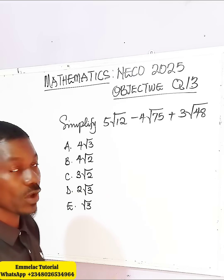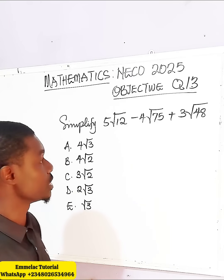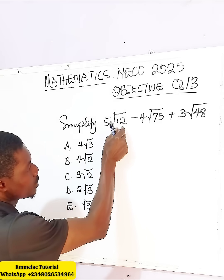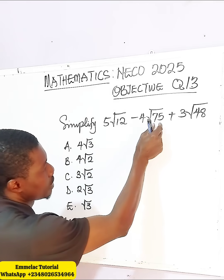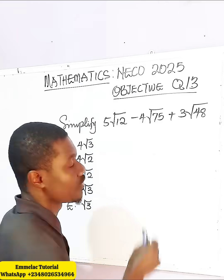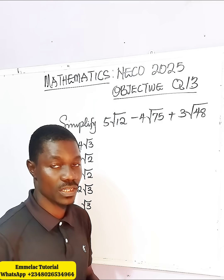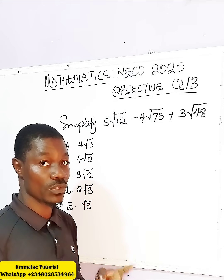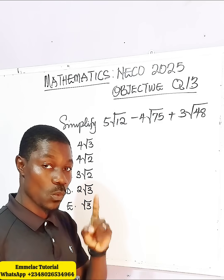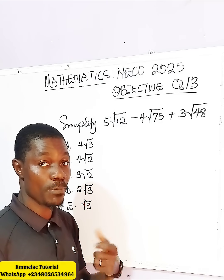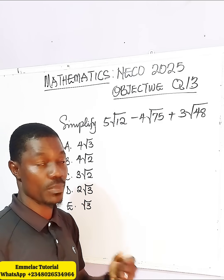To simplify this, what we need to do is take 12, 75, and 48 and split each into two factors, where one of them is a perfect square number.